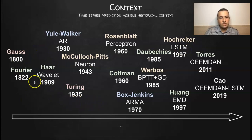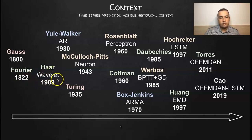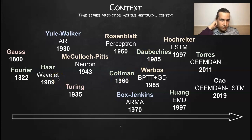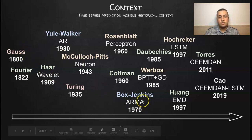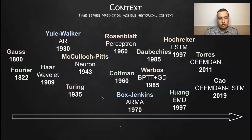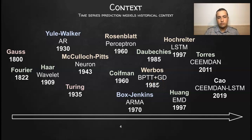Just for a quick reference: the Fourier transform came in 1822, the Wavelet theory first appeared in 1909 and is based on the Fourier transform, then Coifman and Wick developed it further. The Yule-Walker autoregressive model came in 1930, and the ARMA model came in 1970. On the AI side, backpropagation through time and gradient descent came in 1985. It's nice to see how all of this evolved together.